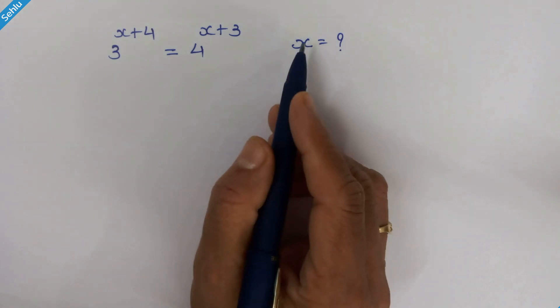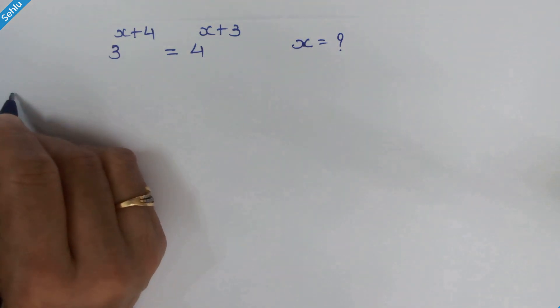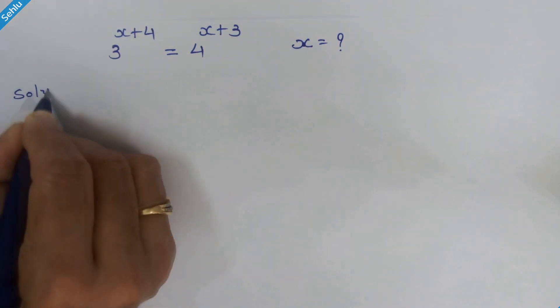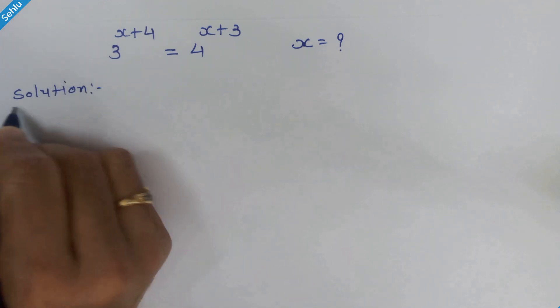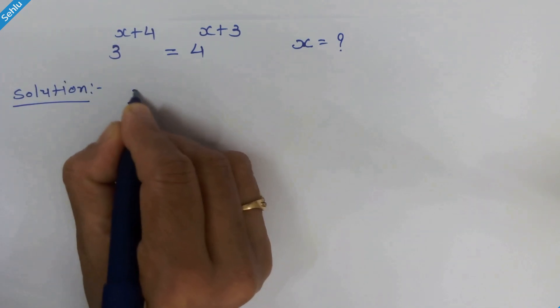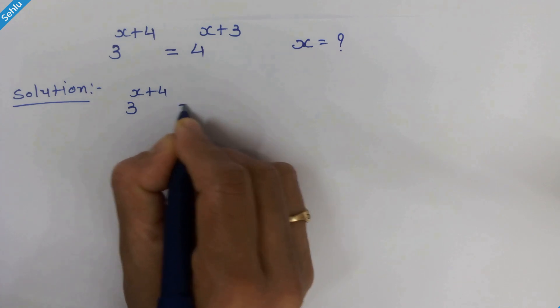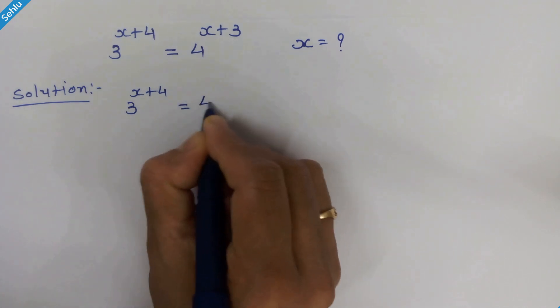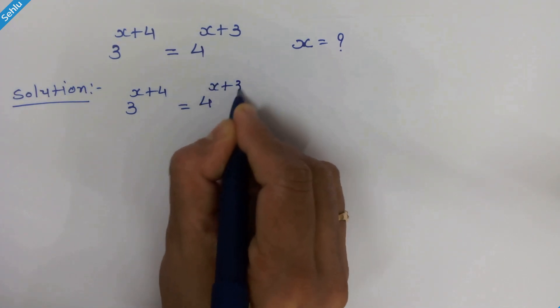Hello friends, let's find the value of x. Our question is 3 raised to x plus 4 is equal to 4 raised to x plus 3.